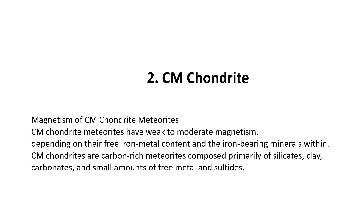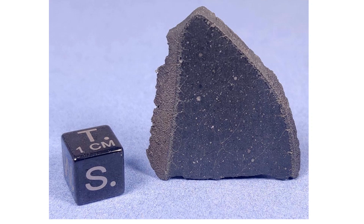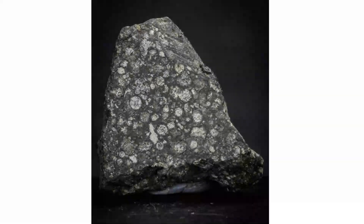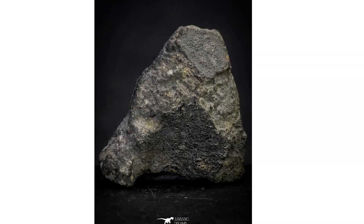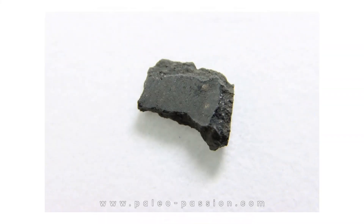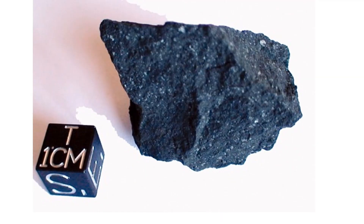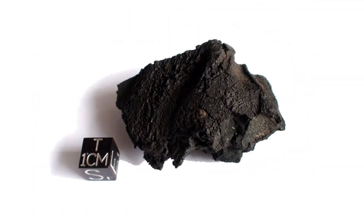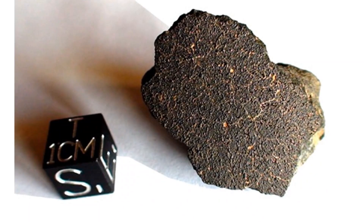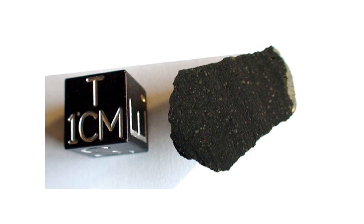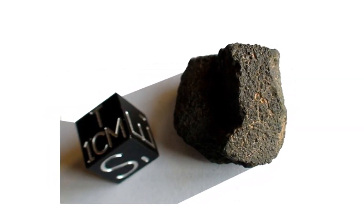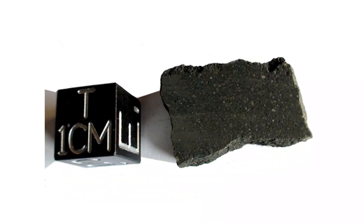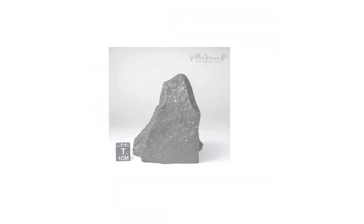Magnetism of CM chondrite meteorites: CM chondrites are carbon-rich meteorites composed primarily of silicates, clay, carbonates, and small amounts of free metal and sulfides. Magnetic characteristics of CM chondrites: CM chondrites contain a small amount of free iron-nickel metal and sulfides, such as pyrrhotite and troilite. Although these free metals are much less abundant than in other chondrites like H or L chondrites, they can still generate a slight degree of magnetism. Phyllosilicate minerals formed through interaction with water are not magnetic, but due to their iron oxide content, they can contribute to weak magnetism, differentiating the magnetism of CM chondrites.